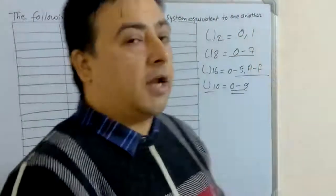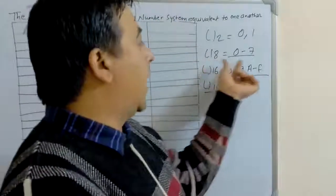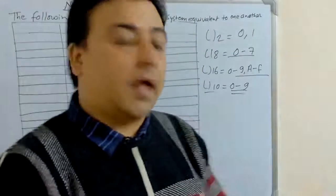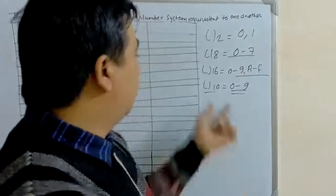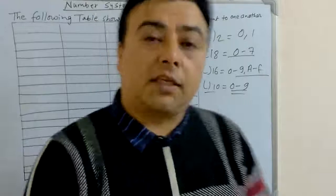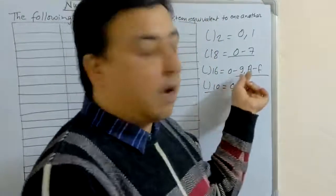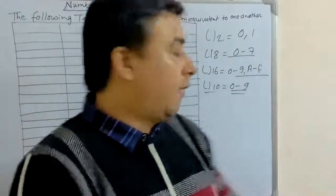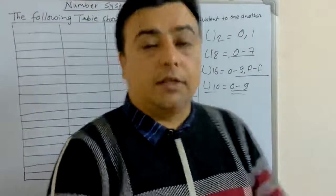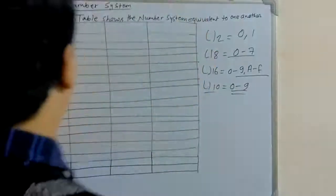To summarize: the binary number system has 2 digits — 0 and 1. Octal has 8 digits, from 0 to 7. Hexadecimal represents base 16, using 0 to 9 as well as A to F alphabets. And decimal has 10 digits, from 0 to 9.